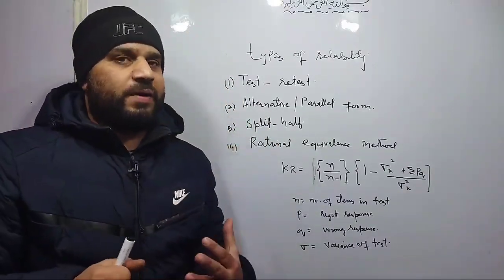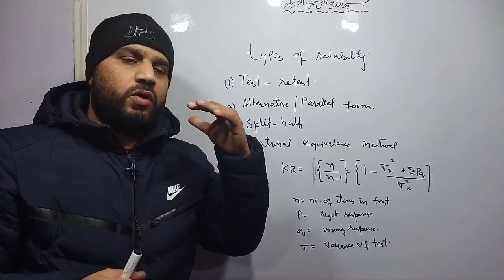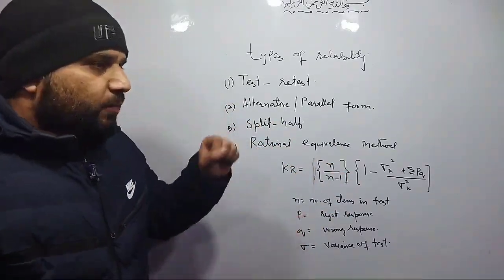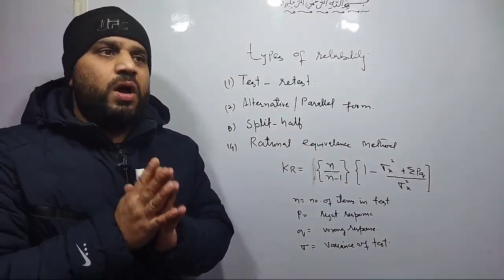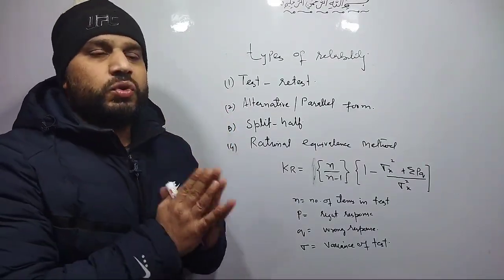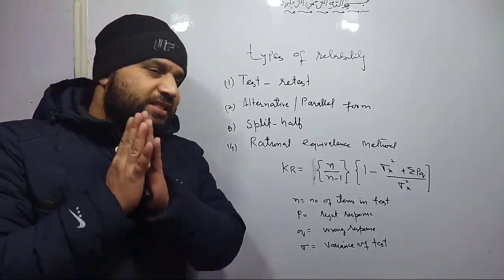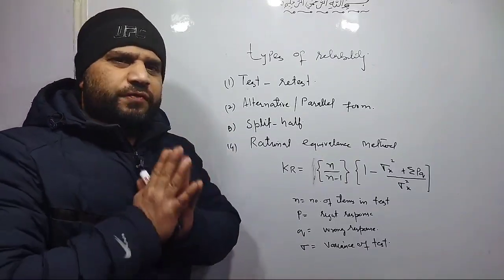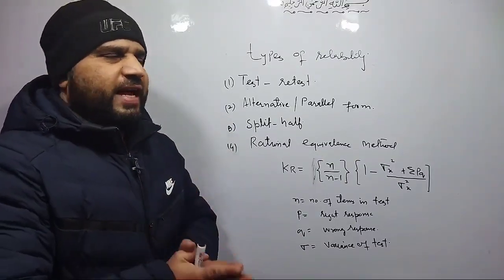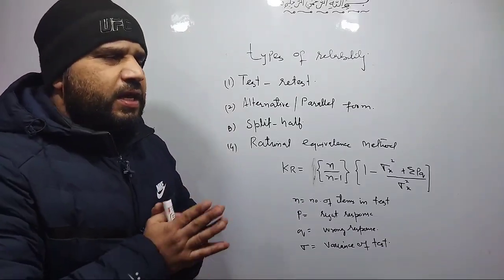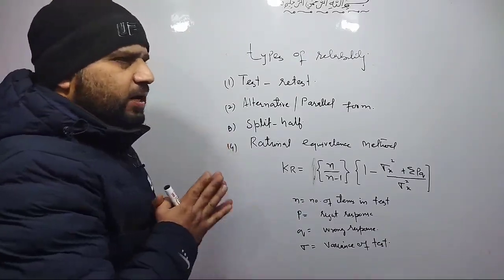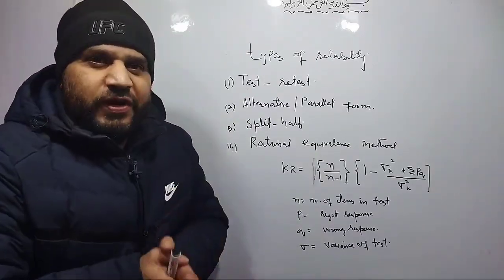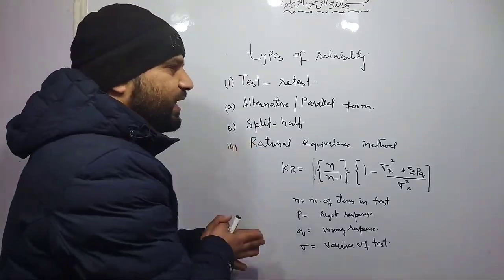Those 4-5 characteristics — it must be objective, systematic, reliable, valid, and standardized — I have already explained. But in your syllabus you need to study reliability in detail: what is reliability, what are the different types of reliability. After that you have to study validity separately, and after that how to construct a test. Today's topic is a very small but important one — it will take just 5 to 10 minutes. Please don't skip this video and try to make notes.